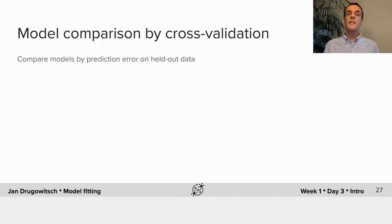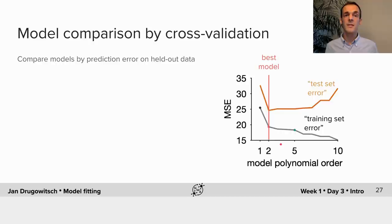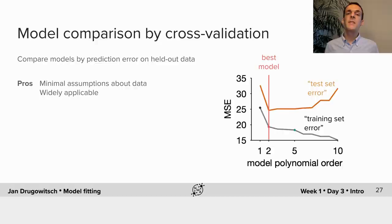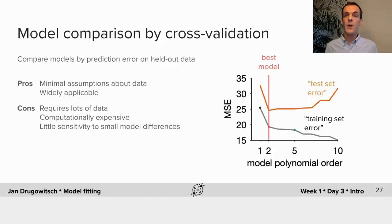Lastly, let's look at the second philosophy of model comparison: model comparison by cross-validation. The underlying idea is to compare models by how well they predict data that hasn't been used to fit them, which implicitly penalizes overly complex models as those start to fit noise in the training data — shown here by a decreasing training set error — leading to worse predictions on held-out data, shown by a mostly increasing test set error. Cross-validation has lots of advantages, the biggest probably being that it makes little assumptions about the data, making it very widely applicable. It also has disadvantages: the requirement for lots of data to split into training and test sets, the need to refit the model multiple times which is associated with higher computational cost, as well as less sensitivity to small model differences. You'll see more details of cross-validation in today's tutorial.